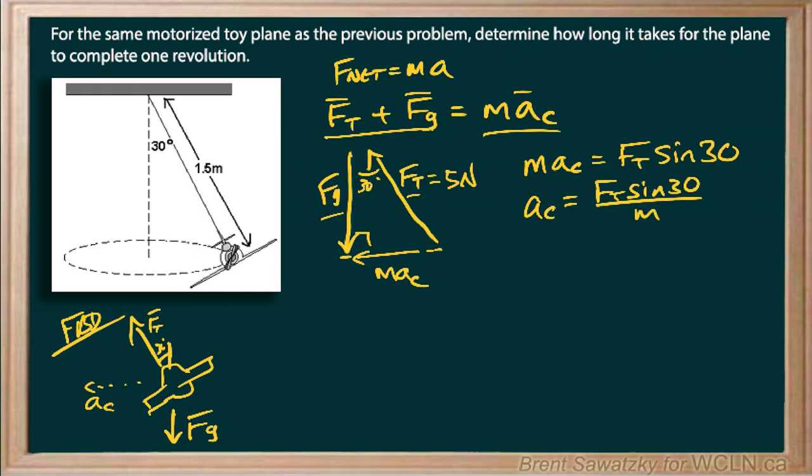All right, and from there we can stop and say, well our AC we know can be written as V squared over R, or the one we want because we want to involve period here, 4 pi squared R over T squared, and that's equal to what we have on the right hand side. So FT sine 30 all over M.